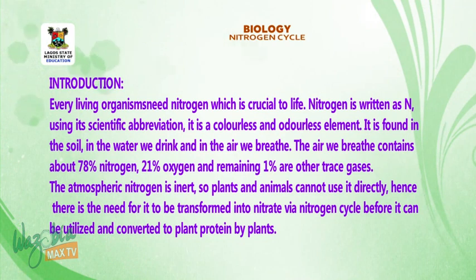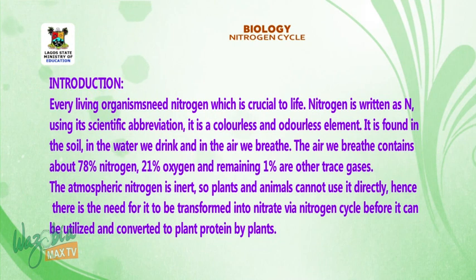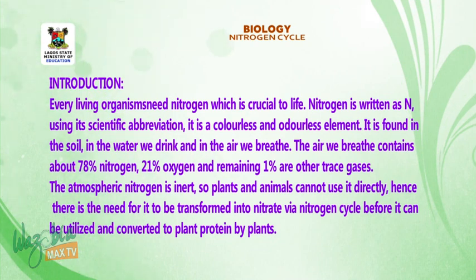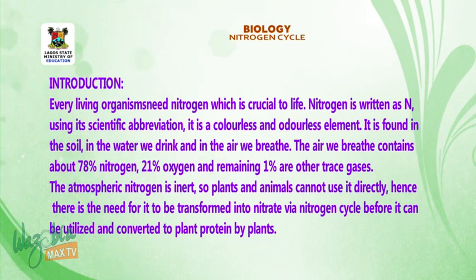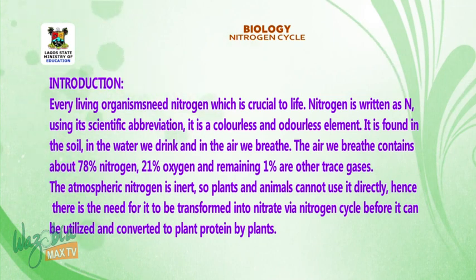The air we breathe contains about 78% nitrogen, 21% oxygen, and the remaining 1% are other trace gases. The atmospheric nitrogen is inert, so plants and animals cannot use it directly. Hence, there is a need for it to be transformed into nitrate via the nitrogen cycle.